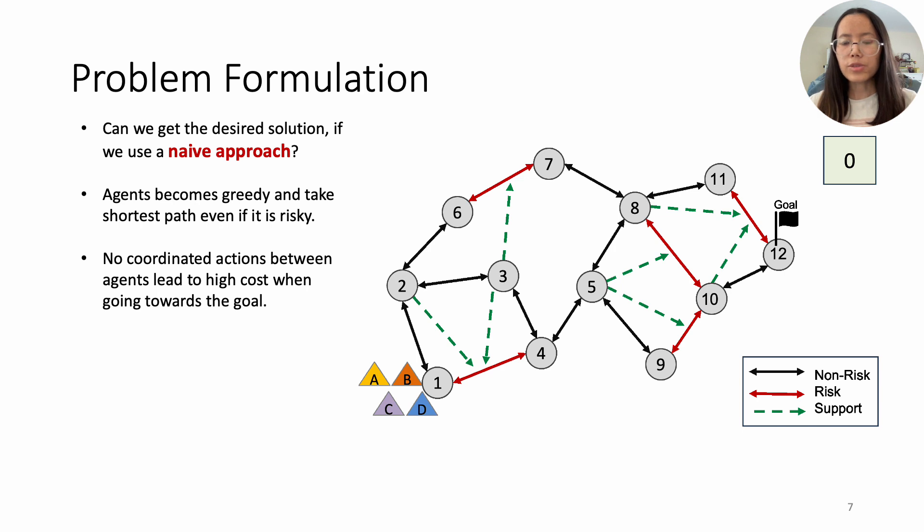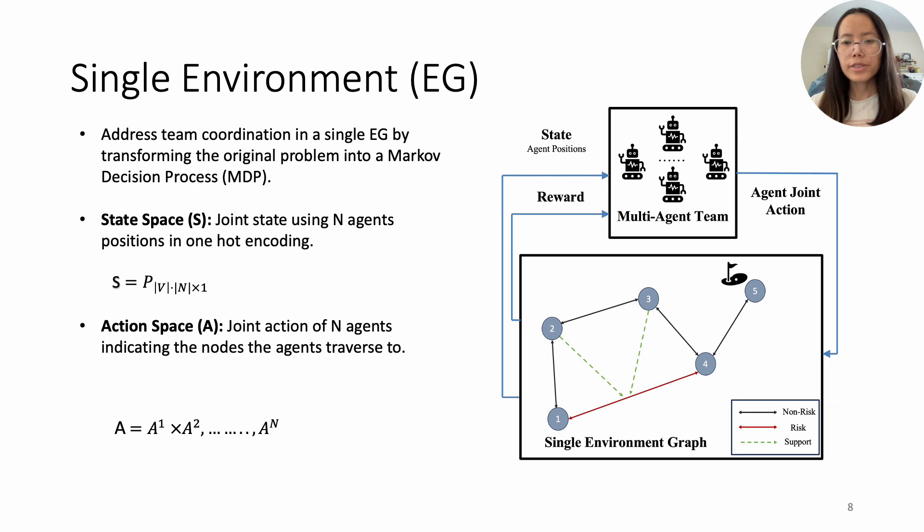To improve efficiency, we can use a naive shortest path algorithm. While agents quickly find shortest routes that lack coordination, this results in increased team cost to reach the goal.